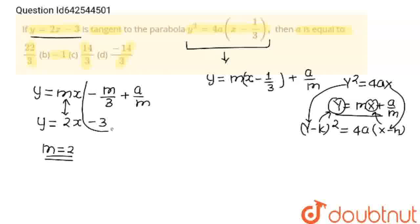So if both tangents are equal, then this value will also be equal and this value will also be equal. So here m = 2, and we'll get -m/3 + a/m = -3.